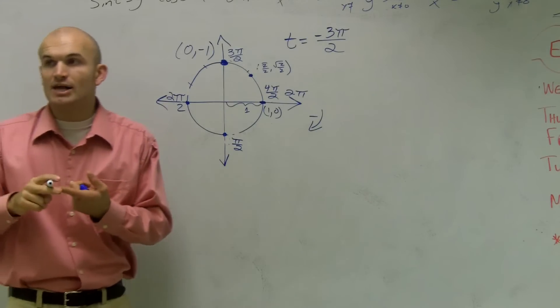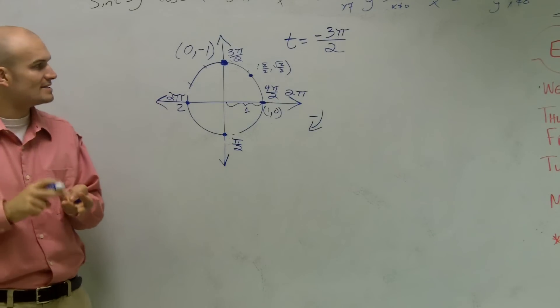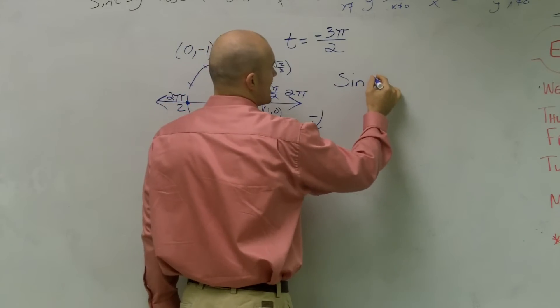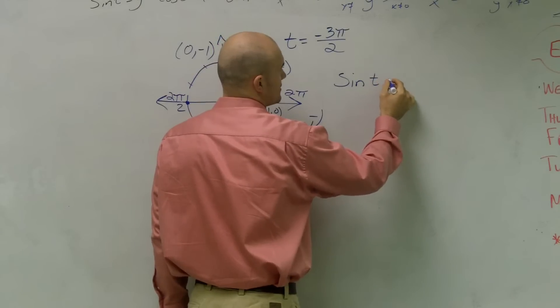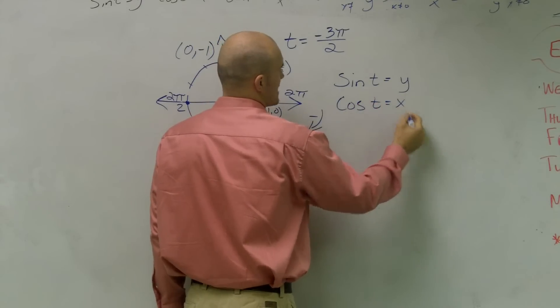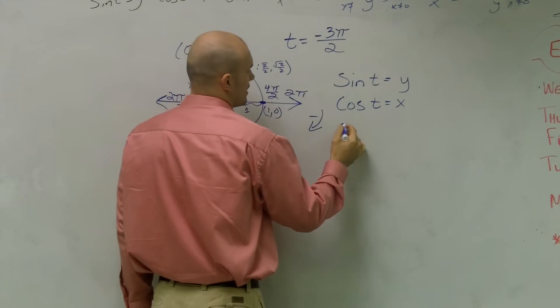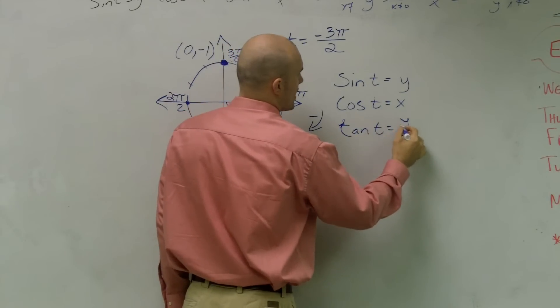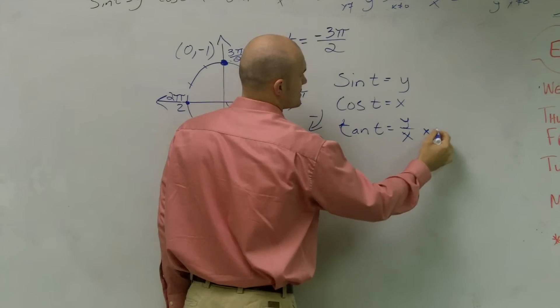And then the question asks, evaluate for your sine, cosine, and tangent. So I can say sine. Remember, sine of t is y. Cosine of t equals x. And tangent of t equals y over x, where x cannot equal 0.